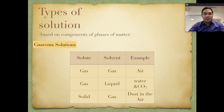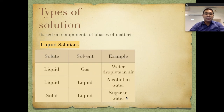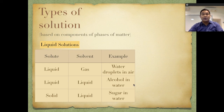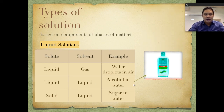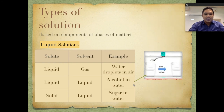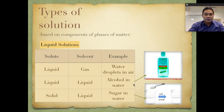A gas solute in a liquid solvent would be carbon dioxide in water. A solid solute in a gas solvent would be dust in air. For liquid solutions, a liquid solute plus a liquid solvent gives us alcohol in water, and a solid solute plus a liquid solvent gives us sugar in water, where sugar is the solute and water is the solvent.